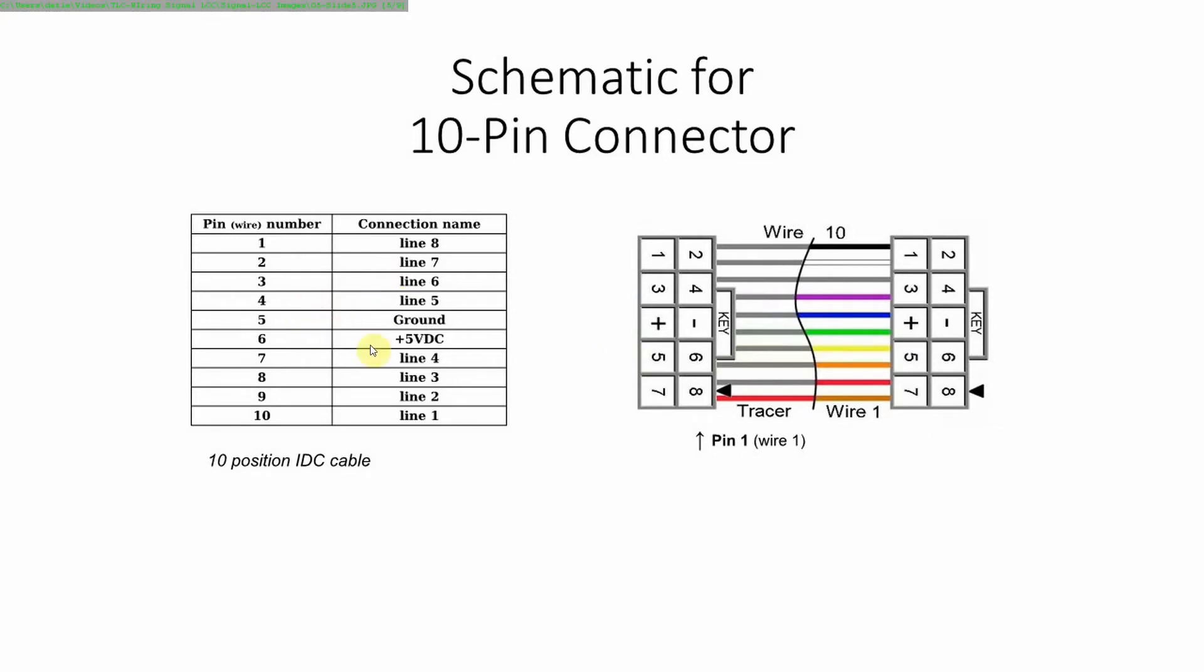And then on five and six, you actually have access to power and ground. Everything on the LCC node runs on five volts. It's back in the day it was called TTL logic. And so you have your power and ground, five volts and ground on five and six on the nodes. And then line four, three, two, and one. Again, these are inputs or outputs on seven, eight, nine, and ten respectively.